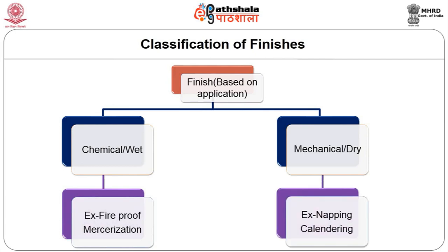Mechanical finish, also called dry finish, involves application of physical treatment — that is friction, pressure, temperature and tension — to the surface of the fabric using machines. Napping, shearing and calendaring are some examples of mechanical finishes. These finishes are either temporary or semi-durable and do not last long.